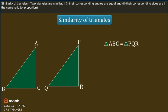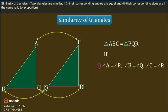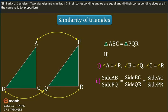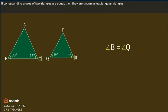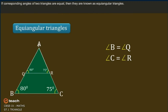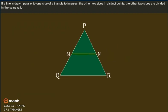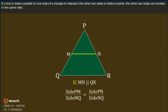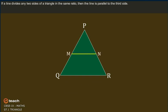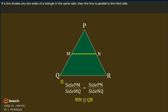Similarity of triangles: two triangles are similar if, first, their corresponding angles are equal, and second, their corresponding sides are in the same ratio or proportion. If corresponding angles of two triangles are equal, they are known as equiangular triangles. If a line is drawn parallel to one side of a triangle to intersect the other two sides in distinct points, the other two sides are divided in the same ratio. If a line divides any two sides of a triangle in the same ratio, then the line is parallel to the third side.